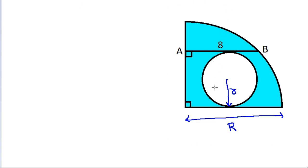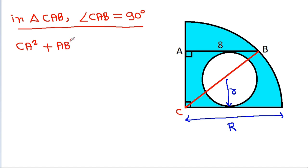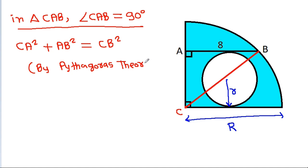Now, if we join these two points, suppose it is C. Then CA squared plus AB squared equals CB squared by the Pythagorean theorem. CB is the radius (capital R) and CA is the diameter of the circle, so CA equals 2r.